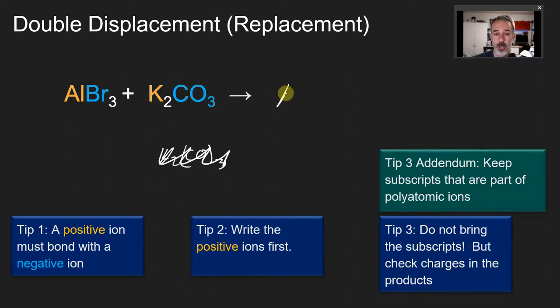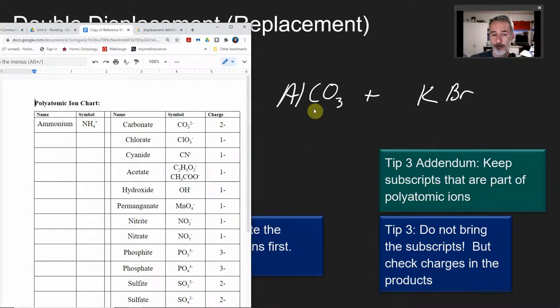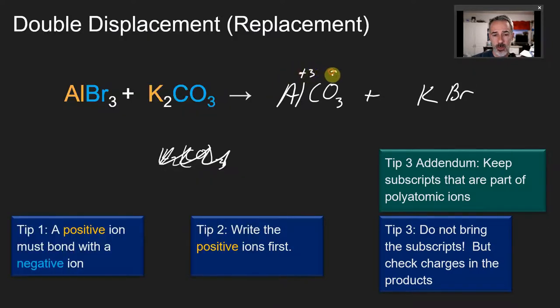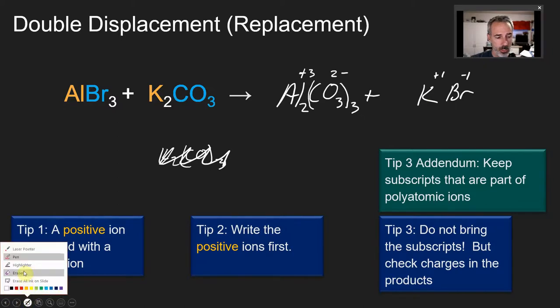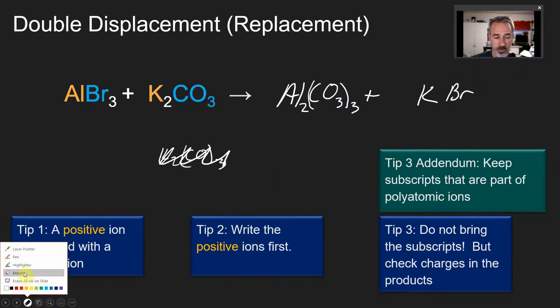Which two ions do I write down first? Aluminum and potassium. Which partner does aluminum get? CO₃, and I need that three on there. Which partner does potassium get? Bromide. If you check charges on this one, aluminum is plus three, carbonate is two minus. That means I'm going to need two aluminums and three carbonates. Two aluminums, and if I have more than one of these, I've got to put parentheses around it, three carbonates. What's the formula for KBr? Plus one, minus one, it's good to go as it is. Then we erase our charges. It's up to you if you want to stop the video here and balance.